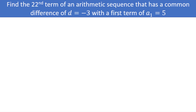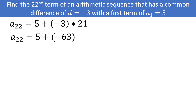Here is another example. If we want to find the 22nd term of an arithmetic sequence with a common difference of d equals negative 3 and a first term of a sub 1 equal to 5, we take 5 and add the common difference of negative 3 twenty-one times. So we have 5 plus negative 3 times 21, which is 5 plus negative 63, which is negative 58. The reason you add one less time than the term you are solving for is because you don't have to add anything to get the first term.